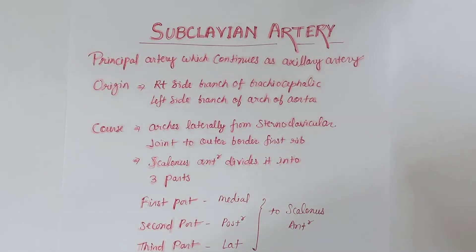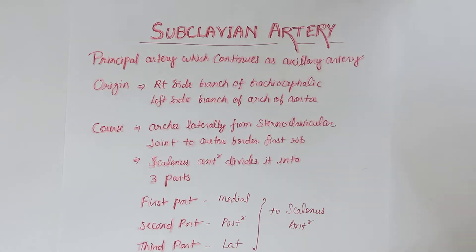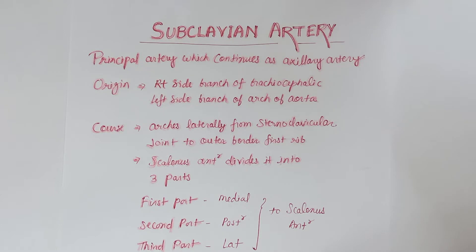The topic is the subclavian artery, the principal artery which continues as the axillary artery for the upper limb and also supplies the neck and brain. On the right side, it is a branch of the brachiocephalic artery, arising posterior to the sternoclavicular joint. On the left side, it is a branch of the arch of aorta, ascending and entering the neck posterior to the left sternoclavicular joint. Each artery arches laterally to the outer border of the first rib, where it becomes the axillary artery. The scalenus anterior muscle crosses the artery anteriorly.